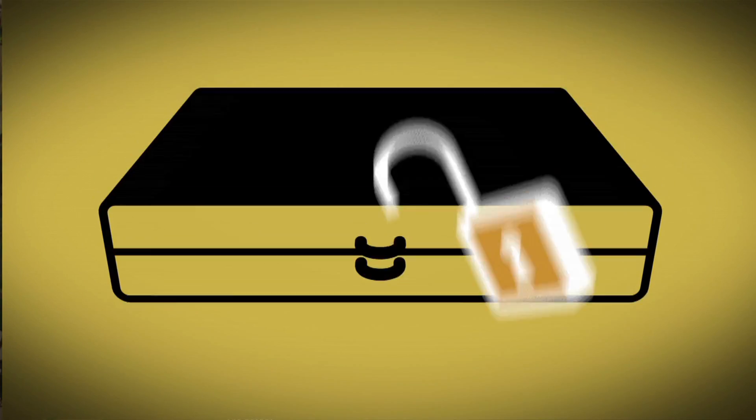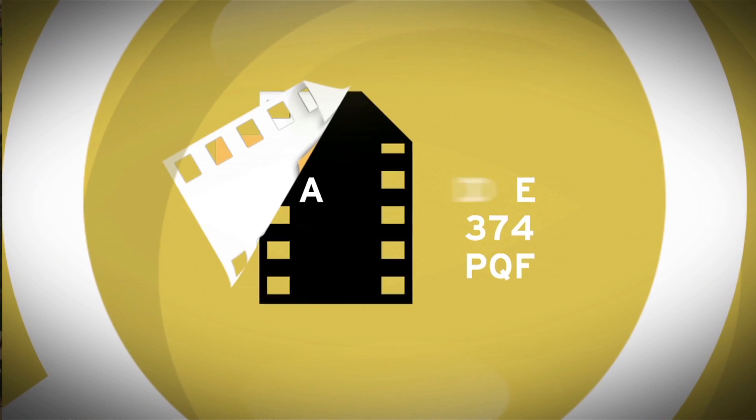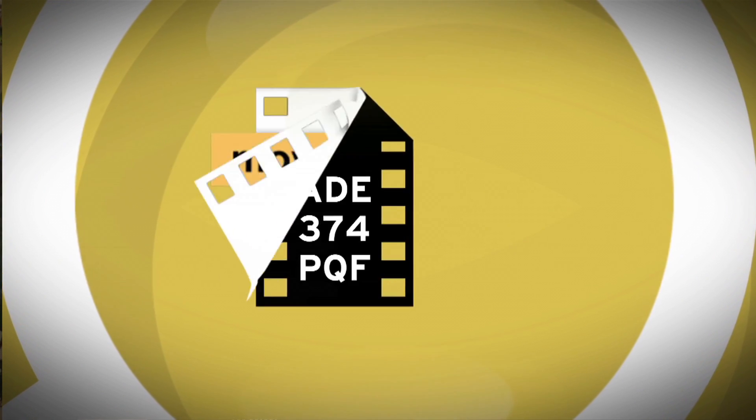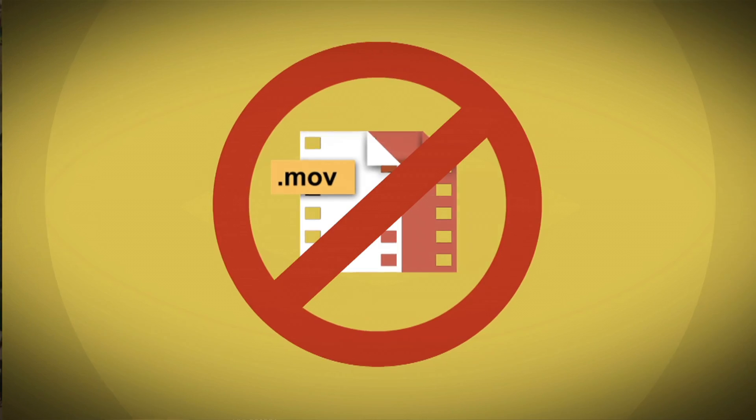DRM is a very useful tool for enforcing content licenses or restricting the playback of encrypted video. But once that encryption has been removed, or the content has been recaptured by camcorder, only an individualized forensic watermark can help the content owner trace that pirated content back to its original source.